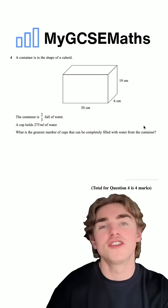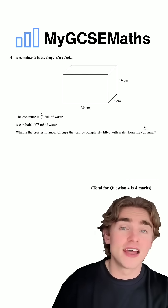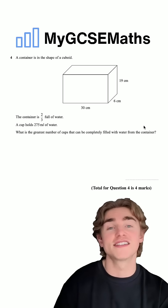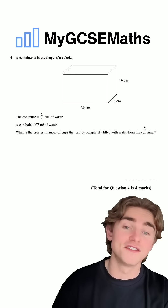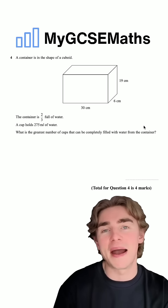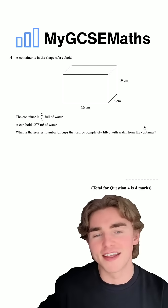Step number one, let's work out the total volume of the shape. Then let's find two thirds of it. That's going to tell us how much liquid is in the container. And then we can divide that by the amount of water in each of the cups to get the amount of cups that we can fill. Let's get it done.